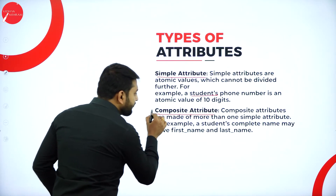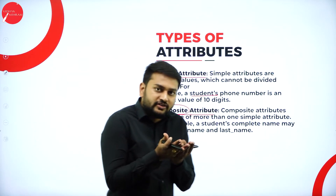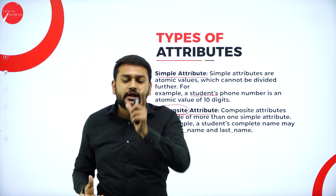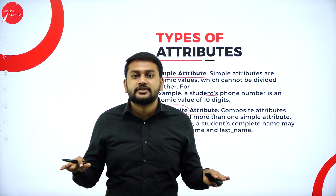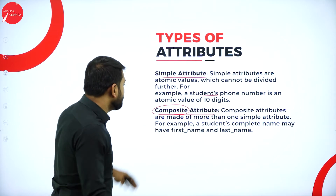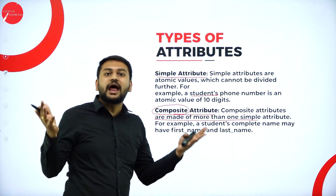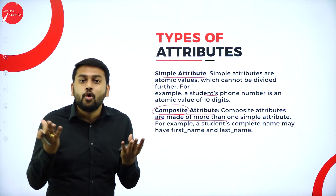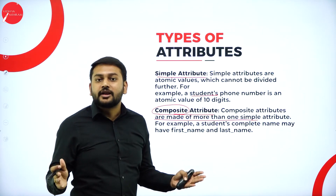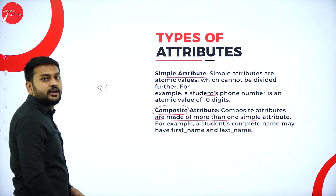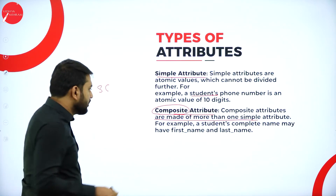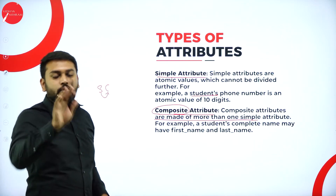There is one more attribute — composite attribute. In the name itself you can see 'composite,' meaning it can be divided further. For example, take the attribute name — can I divide that? Yes, into first name and last name. Such attributes I will call composite attributes. Composite attributes are made up of more than one simple attribute. So: simple attributes are atomic and cannot be divided; composite attributes are composed of more than one simple attribute.